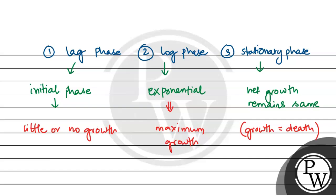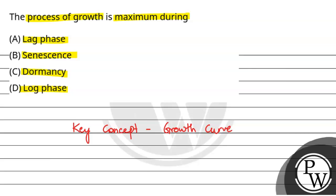So coming back to the question, the process of growth is maximum during: first option is lag phase, this is the initial phase where no or little growth occurs. Senescence is basically the declining growth of an organism, so this is also wrong. Third is dormancy, this is also wrong. And fourth is log phase. Log phase is the exponential phase. The final answer for this question is option D.